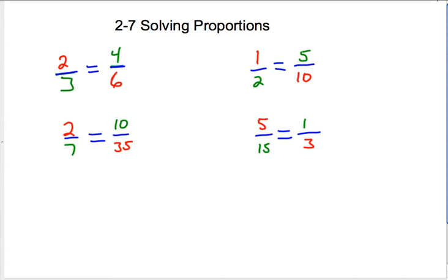In this video, I'm going to be talking about solving proportions. I've written down four proportions here on this page. A proportion is when two fractions are equal to each other. Two-thirds is equal to four-sixths, one-half is equal to five-tenths, two-sevenths is equal to ten-thirty-fifths, and five-fifteenths is equal to one-third.